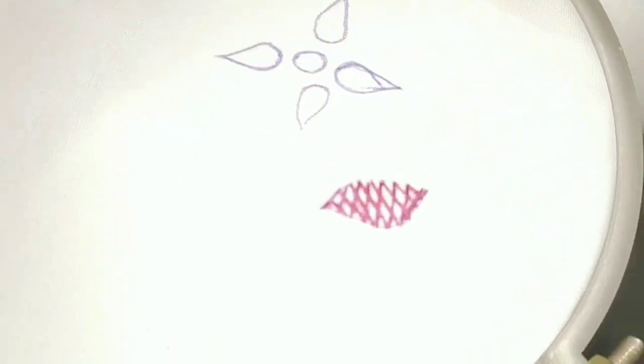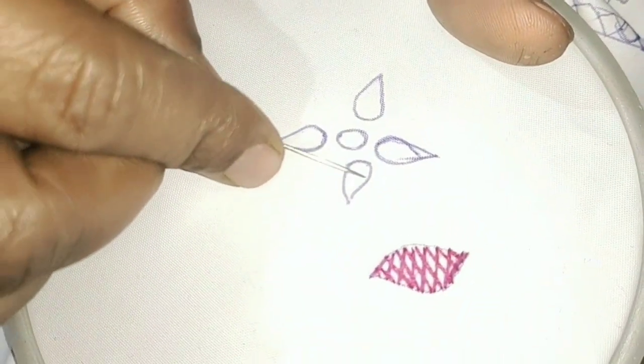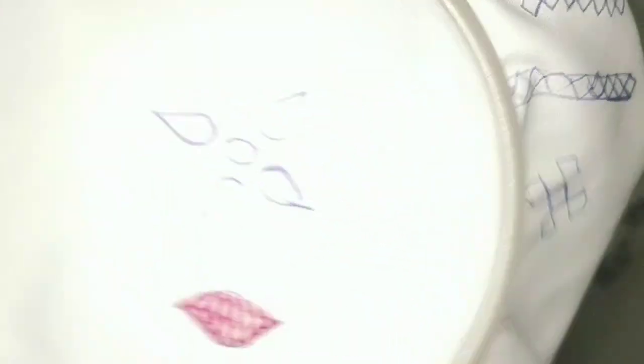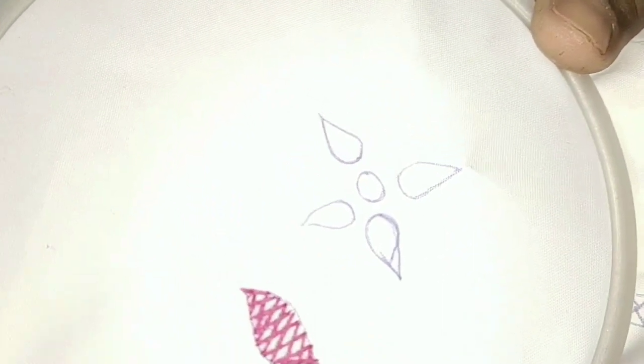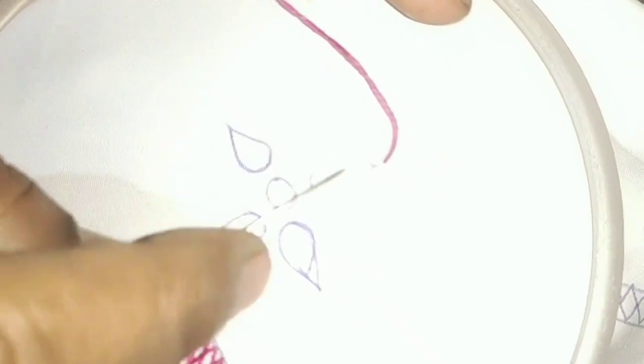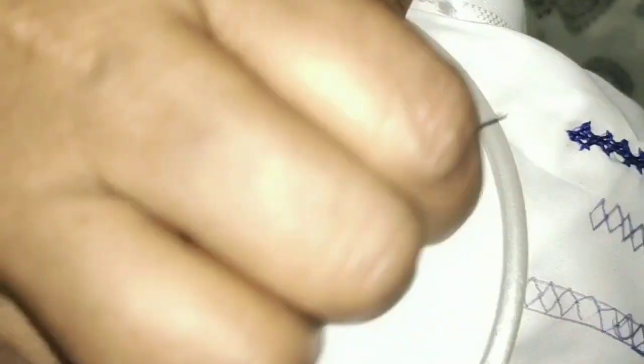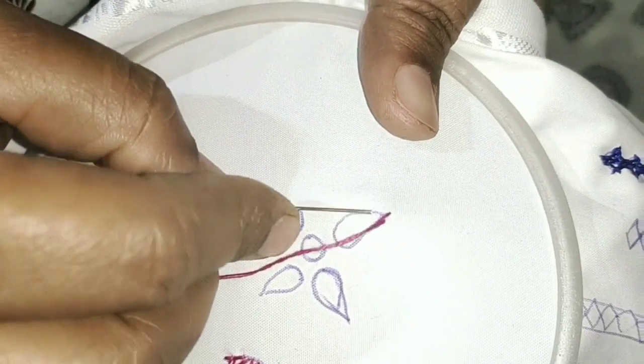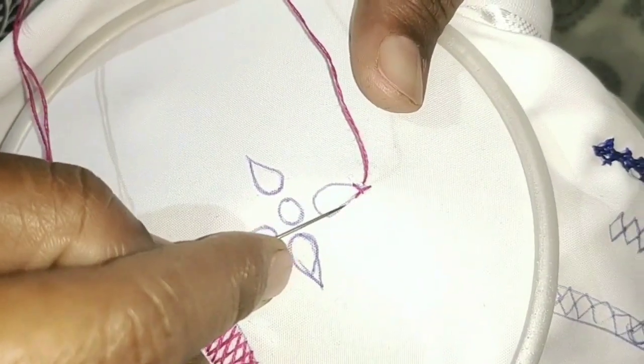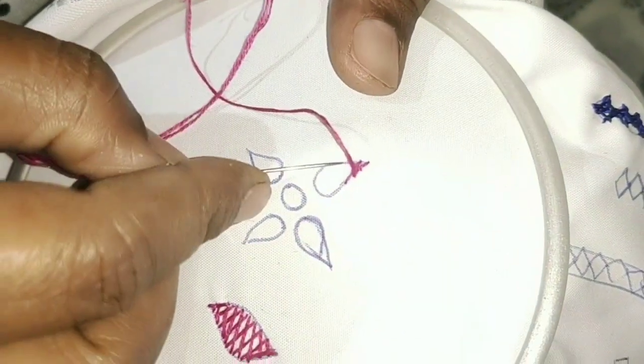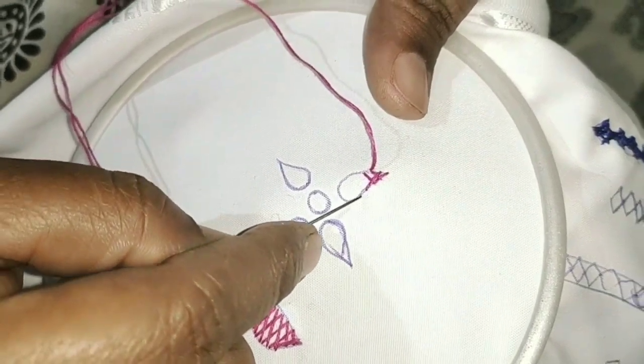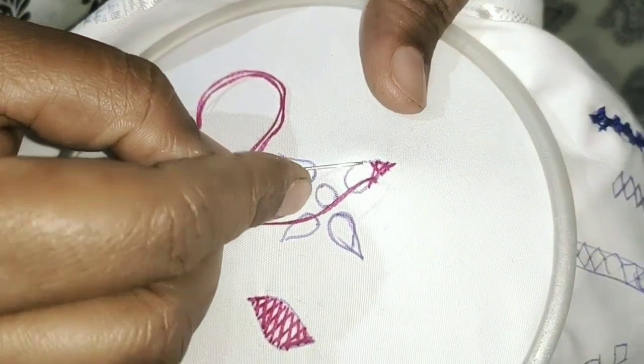Now we will show this one. Now we will add one flower to the flower. Now we will add one. If you cross the other side, you will cross the same way. You will cross the same way.